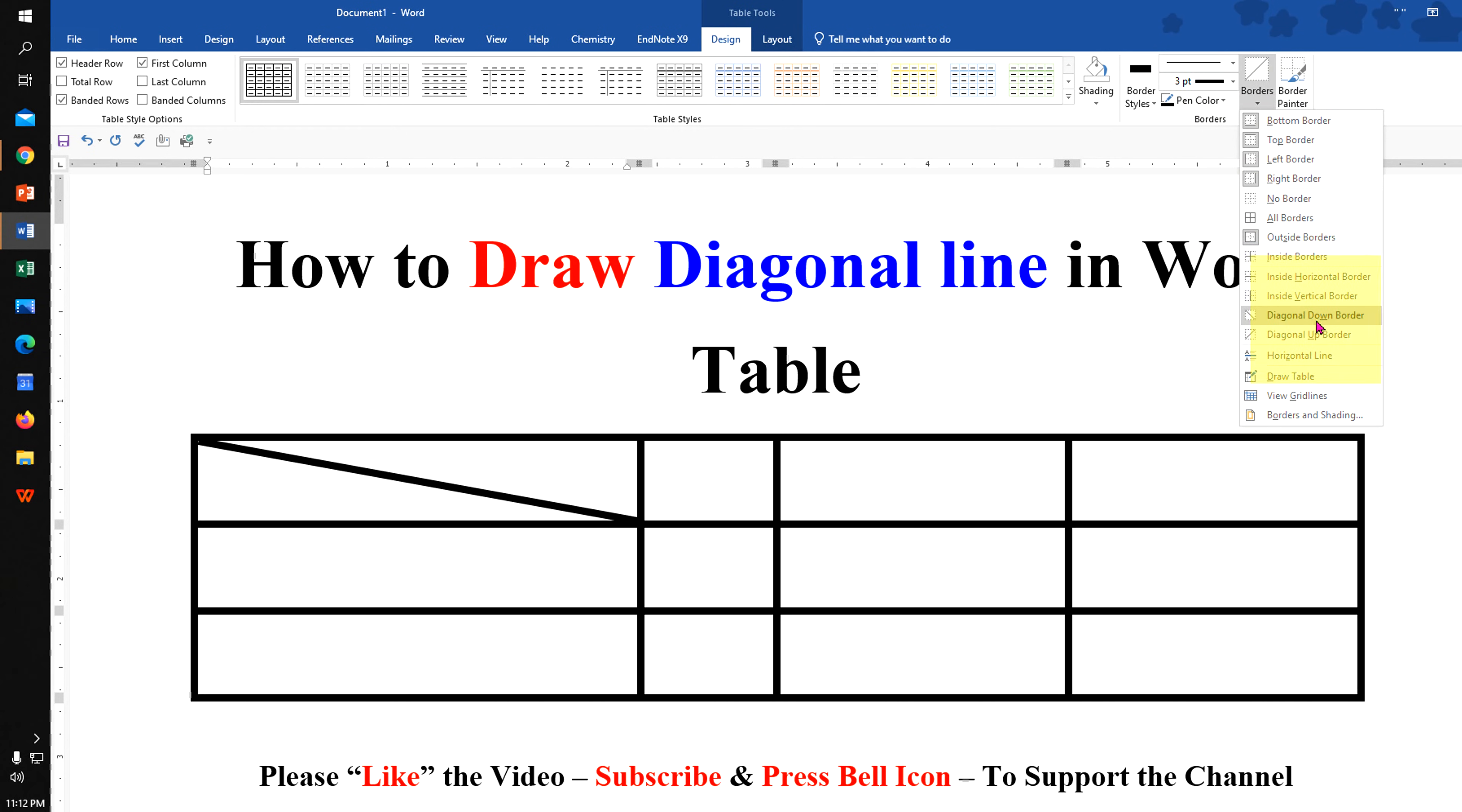Here you will see the option Diagonal Down Border and Diagonal Up Border. You can select any one of your choice. I will select Diagonal Up Border.